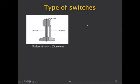Even within split switches, initially there was the undercut switch. In the undercut switch, a portion of the flange of the stock rail was cut and removed to house the tongue rail. However, because the removed flange portion became weak, failures occurred in the stock rail, and this type was dispensed with.